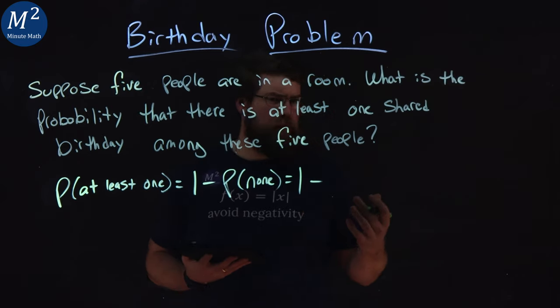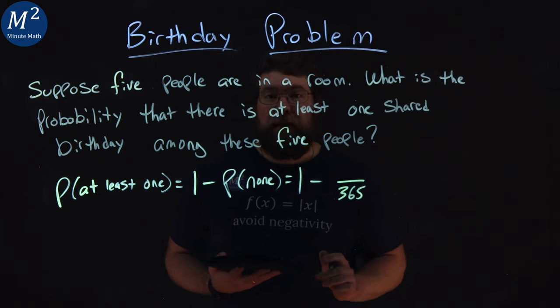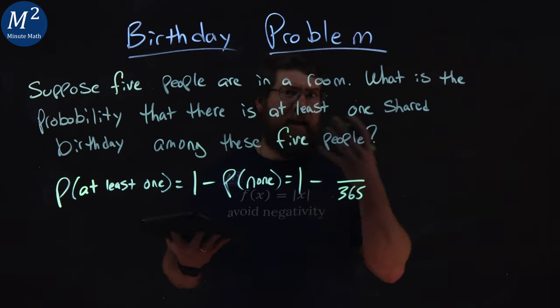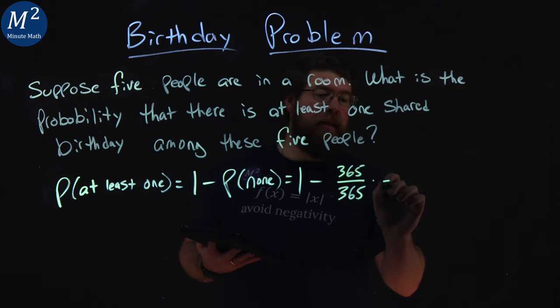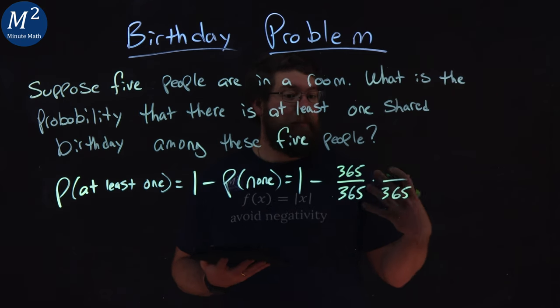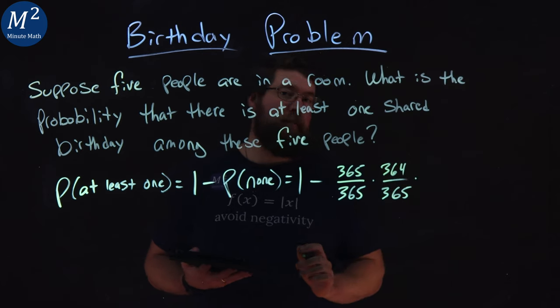There are 365 days in a year. The first person out of the five can have any birthday they want, 365. Then the next person, 365 total days, they're choosing a birthday that's not the same as the first one. So there's 364 days left to choose from.